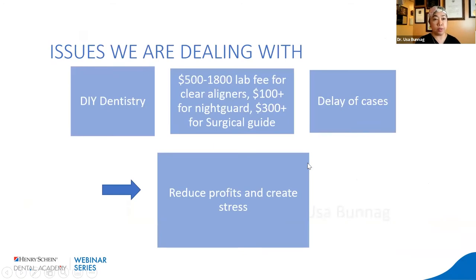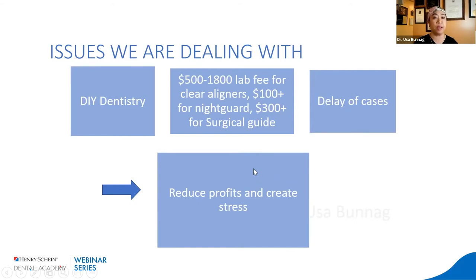As a GP, there are issues to consider. You're looking at DIY dentistry — patients can send impressions online and get night guards returned for under $300. I've seen younger patients do that, and when they come in the occlusion is off. You also see ads for direct-to-consumer smile companies all the time. Another issue is lab costs — for clear aligners like Invisalign, the lab fee ranges from $500 to $1,800.